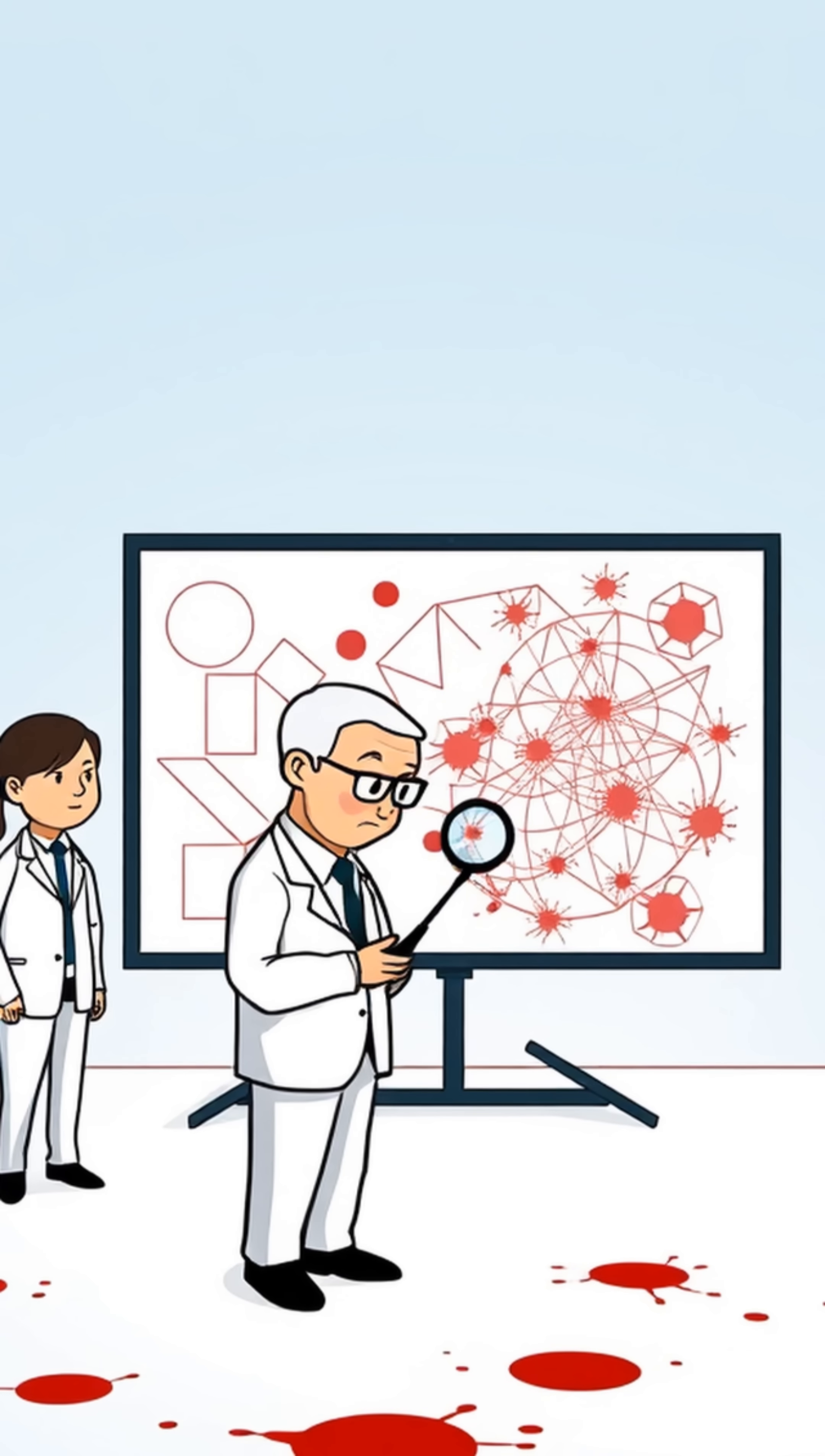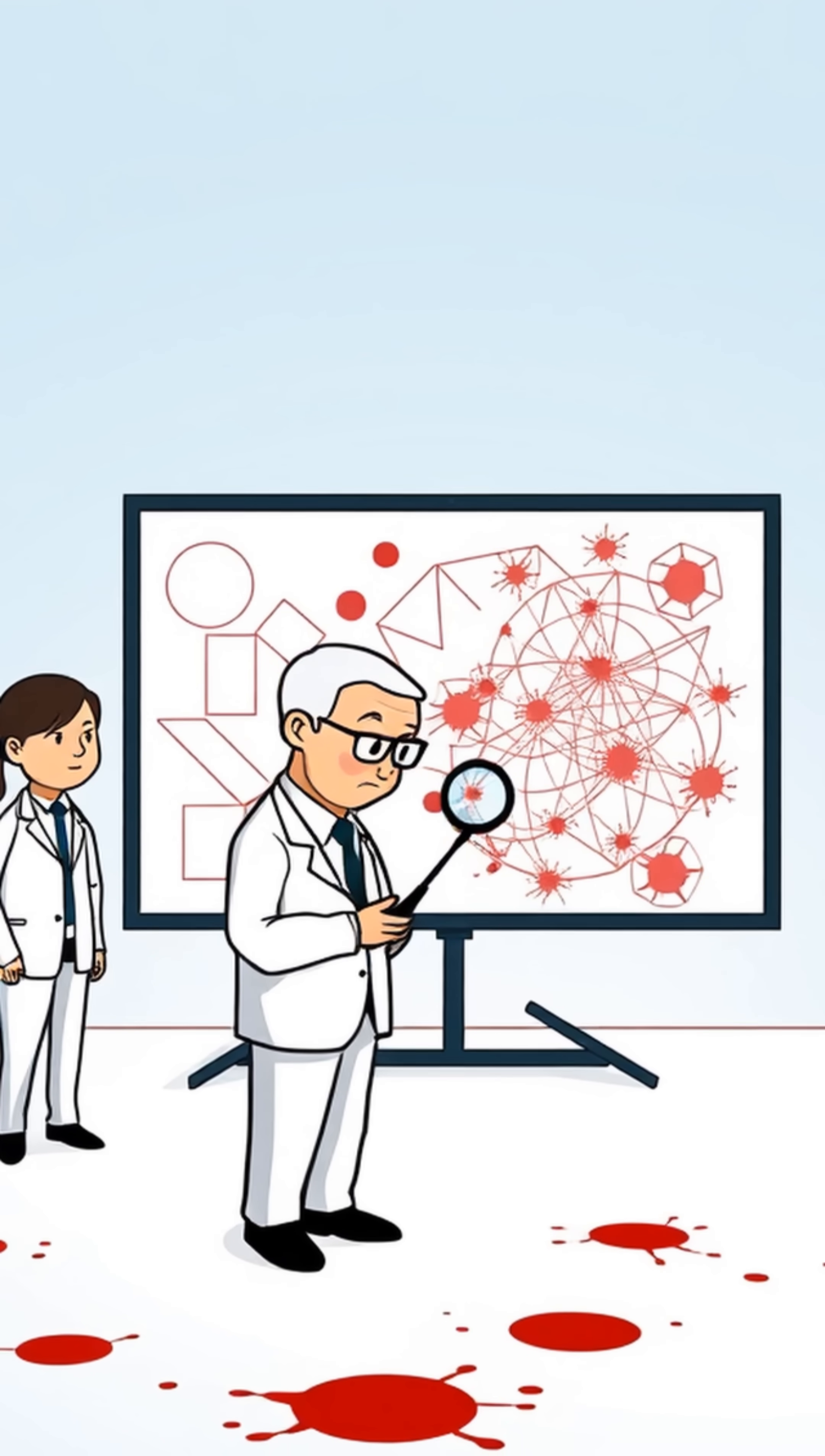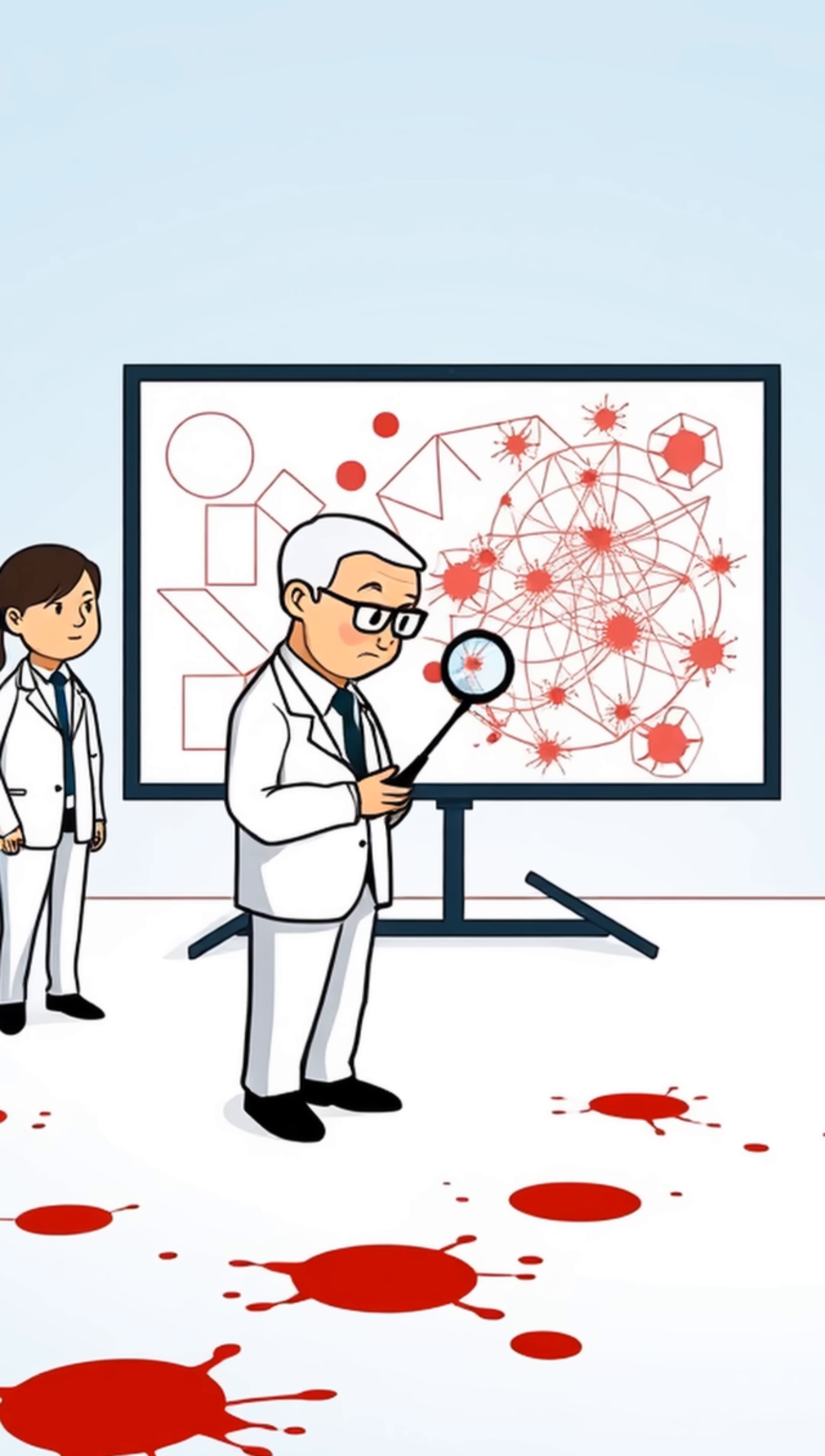A team of forensic experts, led by Dr. Herbert McDonnell, was called in to analyze the bloodstains. Using a new technique called bloodstain pattern analysis, they were able to determine the direction of the blows and the movement of the attacker.